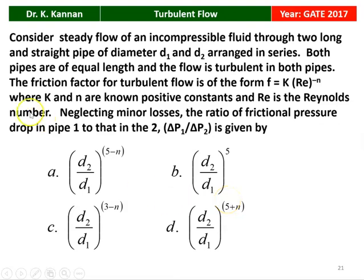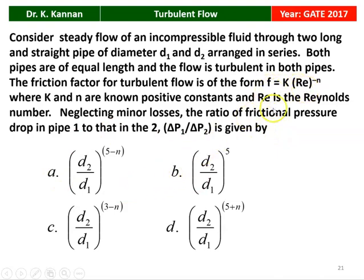The next question is from the 2017 question paper. Consider steady flow of incompressible fluid through two long straight pipes of diameter D1 and D2 arranged in series. Both pipes are of equal length and the flow is turbulent in both. The friction factor is of the form F = K * Re^(-N), where K and N are known positive constants. Neglecting minor losses, the ratio of frictional pressure drop delta P1 / delta P2 = (D2/D1)^(5-N).